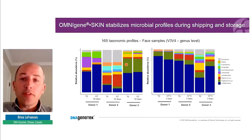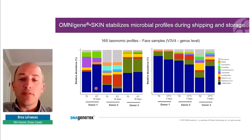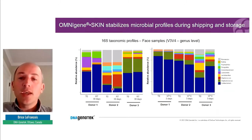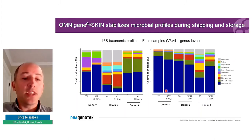To show overall profile stability from the validation data: 16S taxonomic profiles generated from face samples using V1/V3 primers at the genus level show that paired samples — one extracted at baseline versus one extracted after 30 days of room temperature storage — maintain overall profiles. There are small differences, but keep in mind those are different samples. Each donor has a unique profile captured and stabilized in OmniGene Skin. The same holds under harsh conditions such as three days of incubation at 37°C — profiles are stable with no growth of any bacterial taxa.